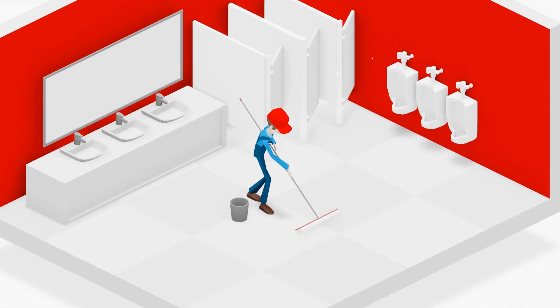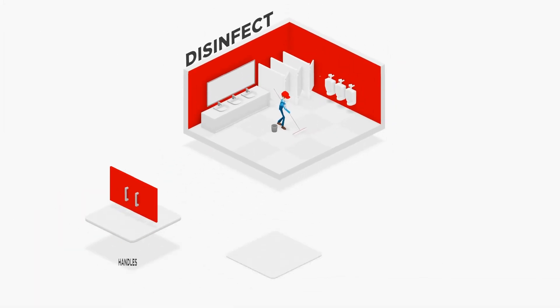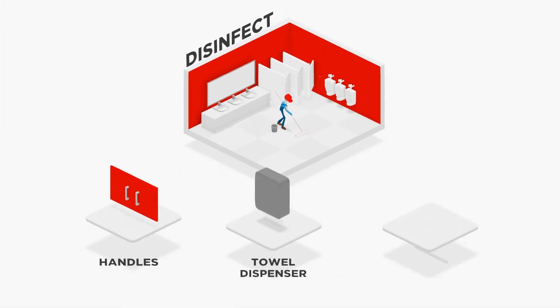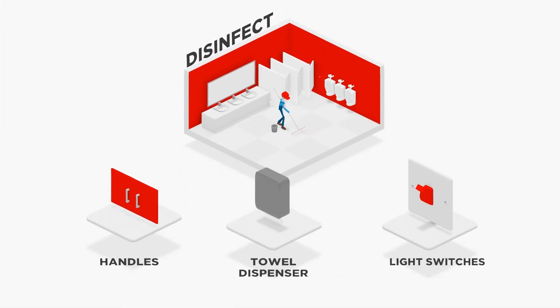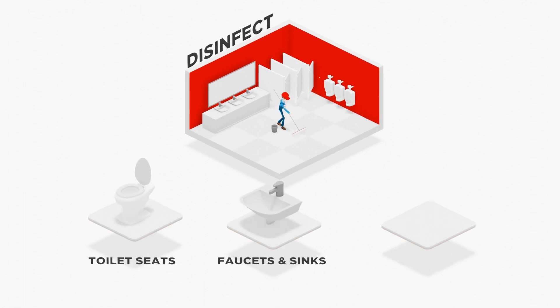But let's not forget the restroom. In this critical area, use disinfectant for things like handles, towel dispensers, light switches, toilet seats, faucets, sinks, and countertops.